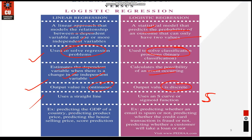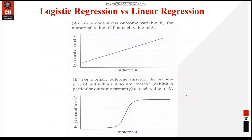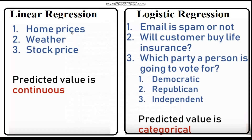Examples of linear regression include predicting the GDP of a country, product prices, house prices, and selling prices. Logistic regression examples include predicting whether an email is spam or not, whether a credit card transaction is fraudulent, whether a customer will buy insurance, and which party will win an election — all cases where the predicted value is categorical.